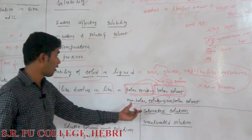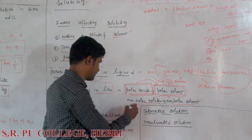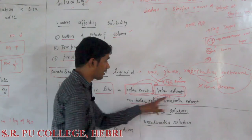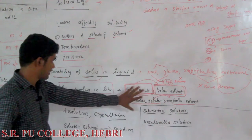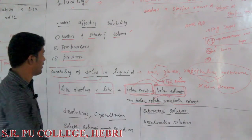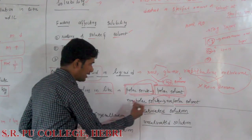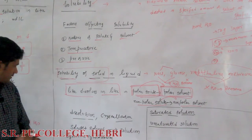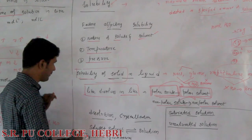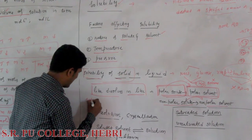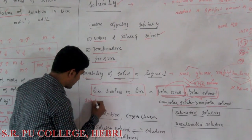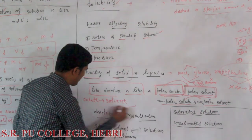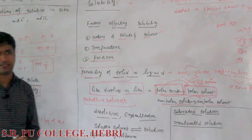So polar-polar interactions lead to dissolution, and nonpolar-nonpolar interactions lead to dissolution. A polar-nonpolar combination is insoluble. In general, like dissolves in like. Now, what happens when you put any solute into a solvent?